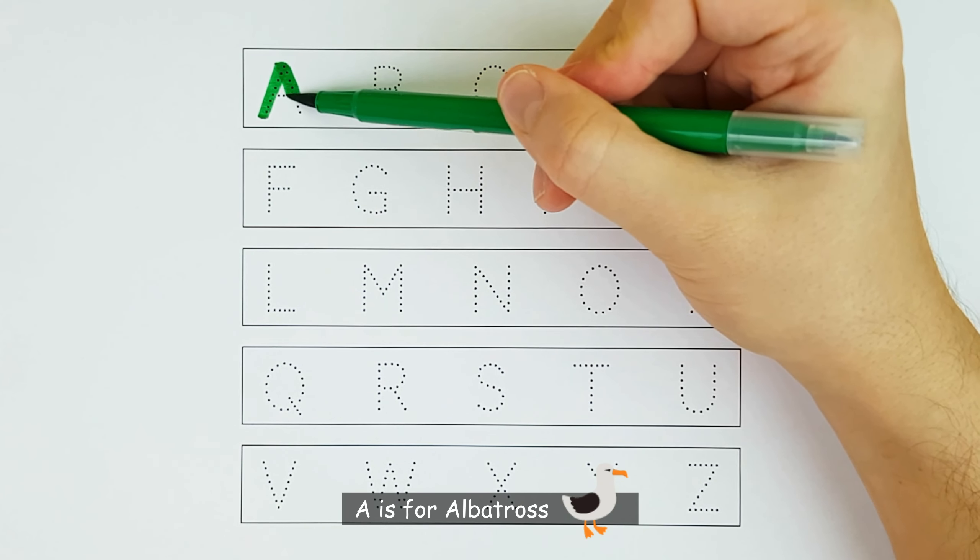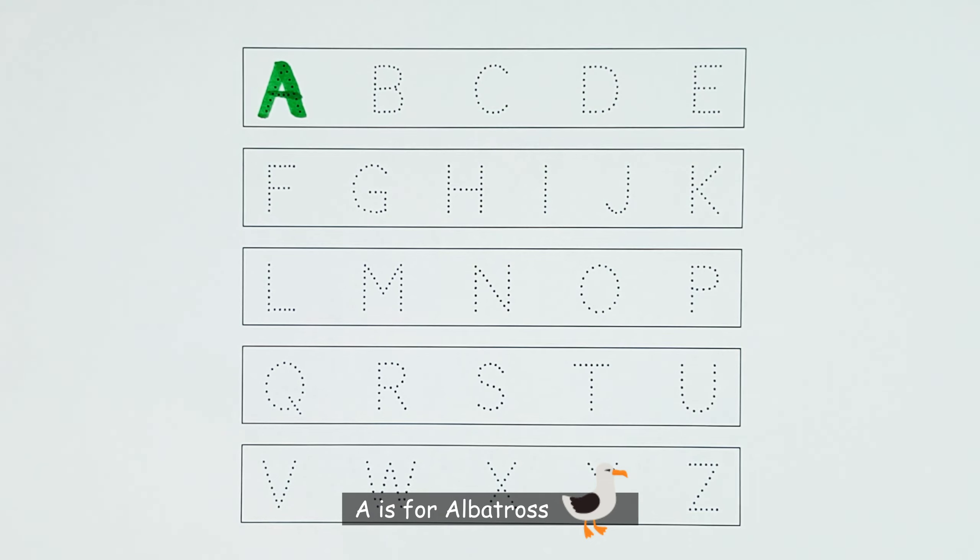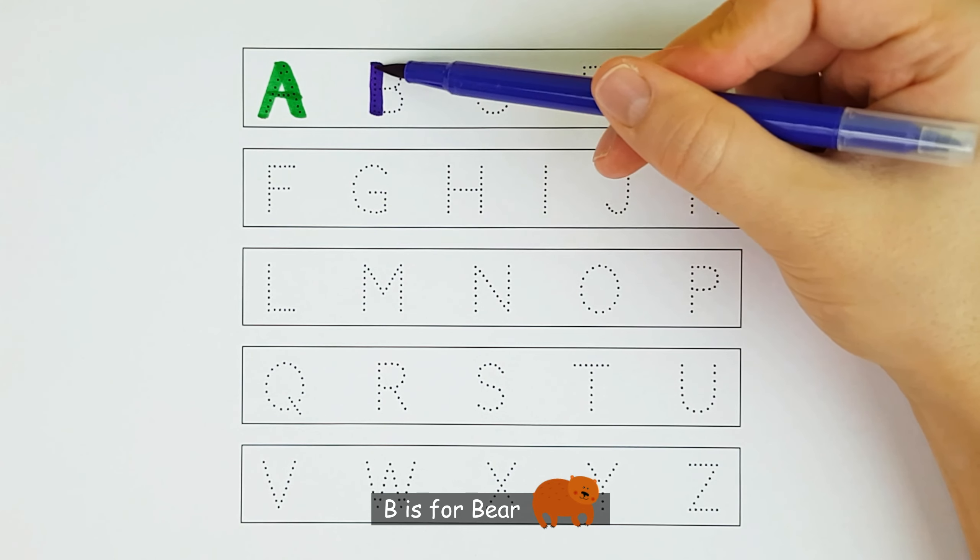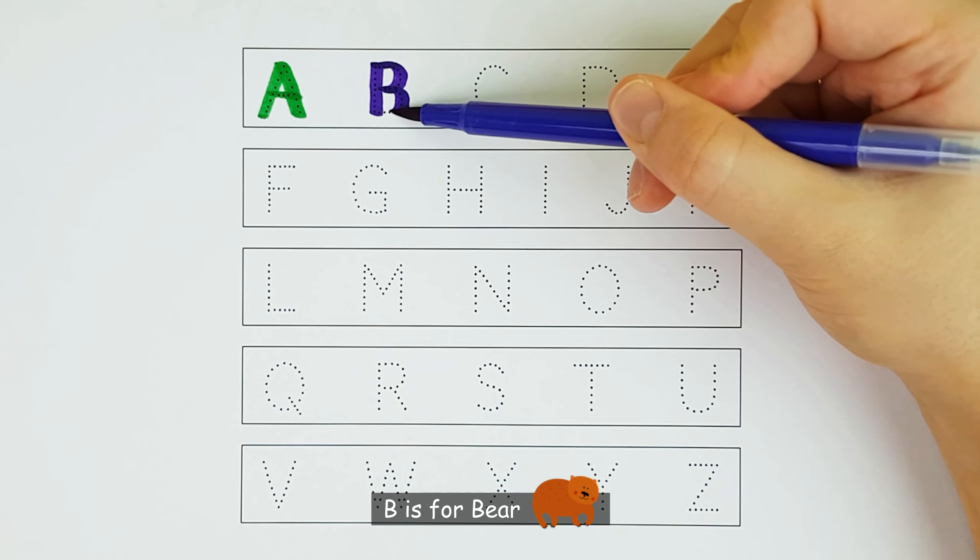A. A is for Albatross. A. B. B is for Bear. B.